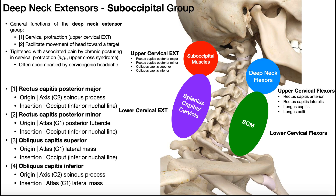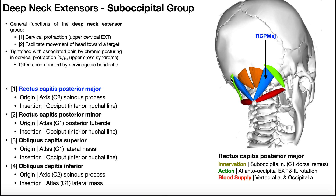Let's now talk about the suboccipital muscles in more detail. There are four of these, and to see them you have to peel off pretty much everything because they're right up against those vertebrae. In blue, you see the rectus capitis posterior major. It originates off of the spinous process of C2, the axis, and inserts on the occiput at the inferior nuchal line. All of these muscles are innervated by the suboccipital nerve, which comes from the dorsal ramus of the C1 spinal nerve — as opposed to the deep neck flexors, which are all ventral rami.